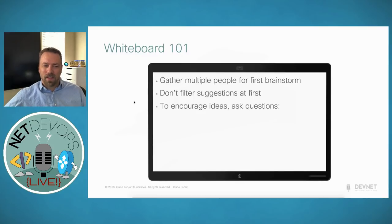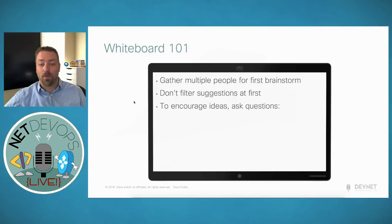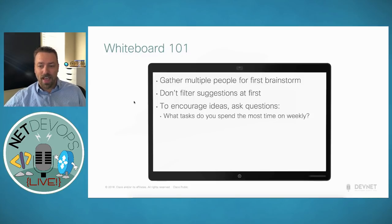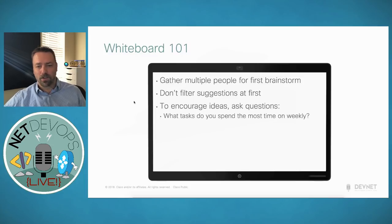One of the biggest challenges is lack of inspiration. When stuck, it helps to ask questions to elicit ideas. The first question I ask is: what tasks do you spend the most time on weekly? Automation tends to boil down to streamlining your day-to-day, repetitive, or most time-consuming tasks. That one question typically unlocks a lot of interesting ideas about what across your entire team may be most time-consuming.